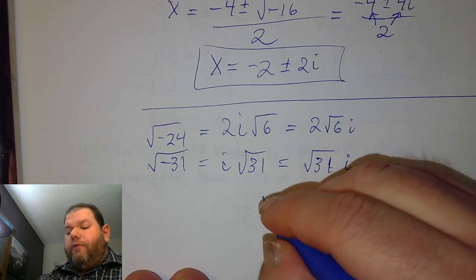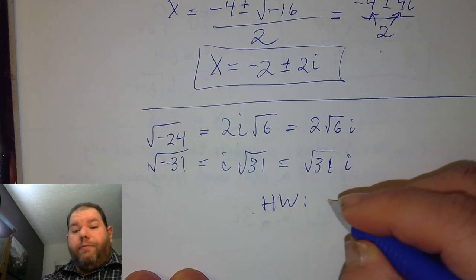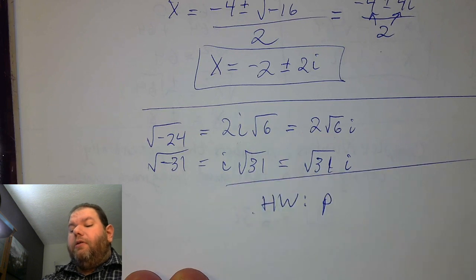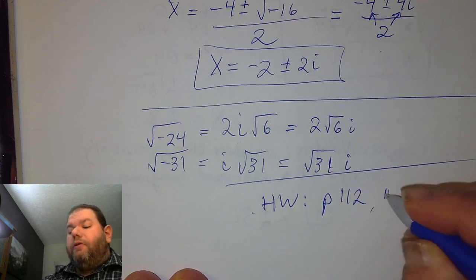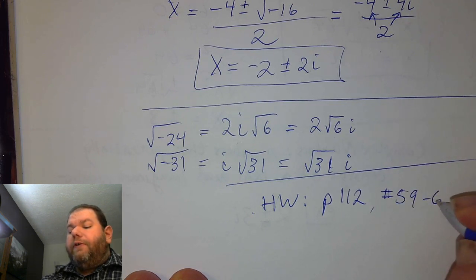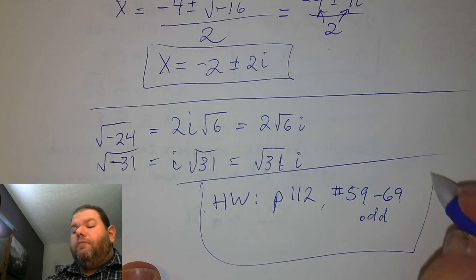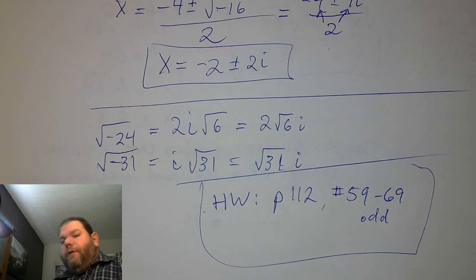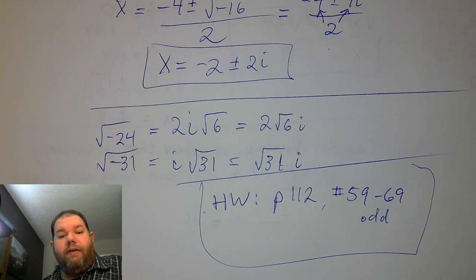For homework today — just for practice — look at page 112, problems 59 through 69, just the odd problems. So you do 59, 61, 63, 65, 67, and 69.